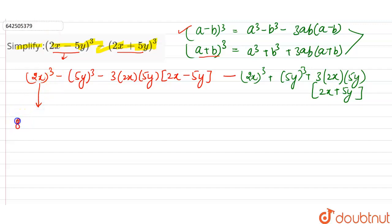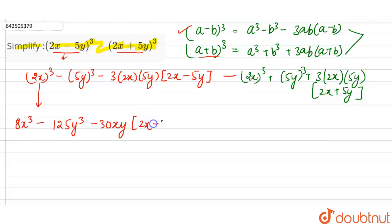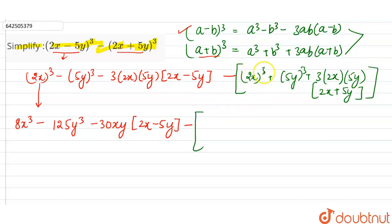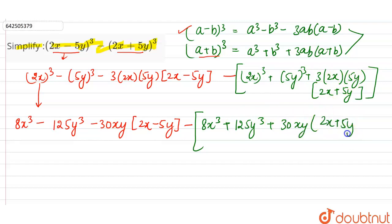Now let's calculate the numerical values. (2x) whole cube equals 2×2×2 = 8x cube. (5y) whole cube equals 5×5×5 = 125y cube. And 3 into 2x into 5y equals 3×2×5 = 30, so this gives 30xy into (2x minus 5y). For the second bracket: 8x cube plus 125y cube plus 30xy into (2x plus 5y).